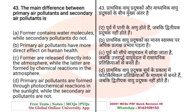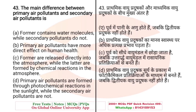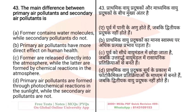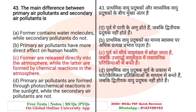Question: The main difference between primary air pollutants and secondary air pollutants is — as we learned in the last question, air pollutants have two types: primary and secondary. The main difference is — A. Former contains water molecules while secondary do not; B. Primary have more direct effect on human health; C. Primary are released directly into the atmosphere while the latter are formed by chemical reactions in the atmosphere; D. Primary are formed through photochemical reaction in sunlight while secondary are not. The right answer is C.